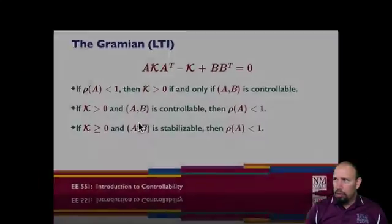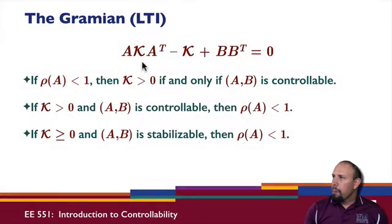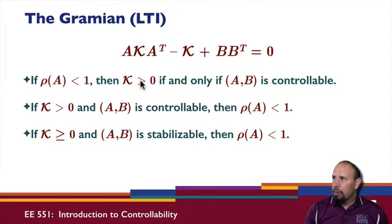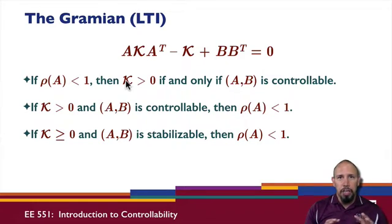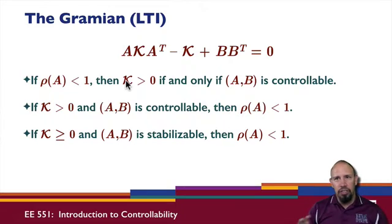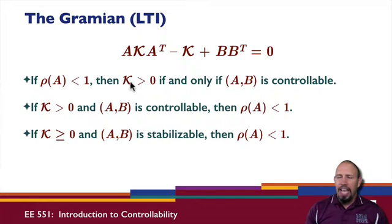Here are three results. If the spectral radius of A is less than 1 and K is positive, then K will be positive definite if and only if AB is controllable. So there's a relationship between stability, controllability, and K being positive definite. In general, stability and controllability are completely separate properties — the system can be stable and controllable, or stable and uncontrollable. But what this result shows is they are related through a positive definite K matrix.